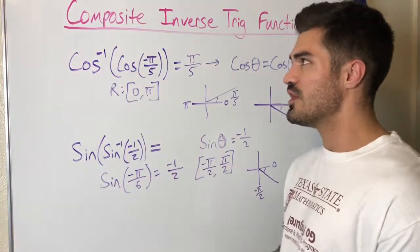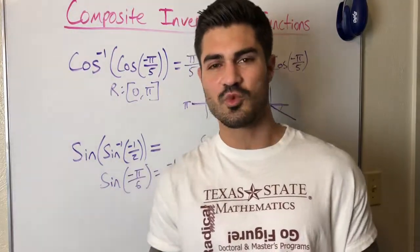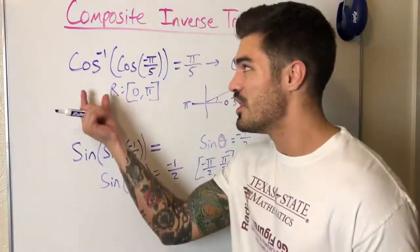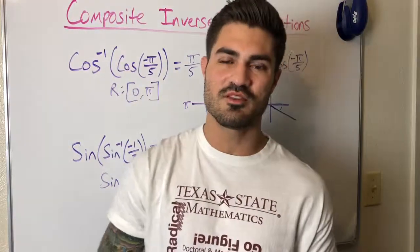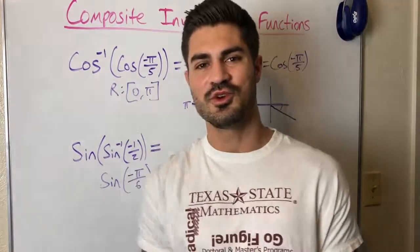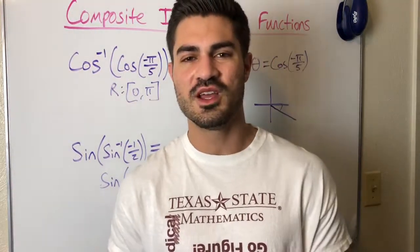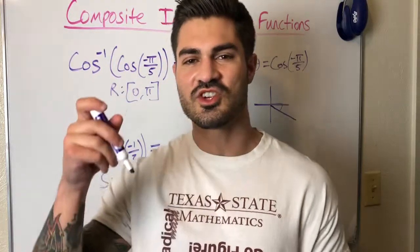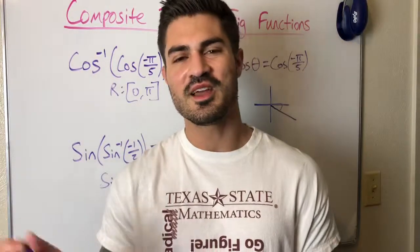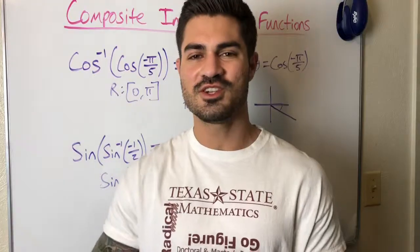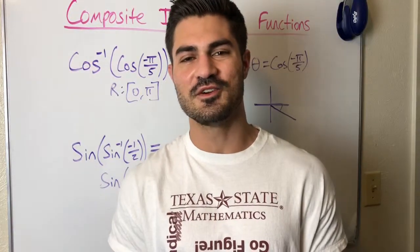In part two, I'll do more challenging examples where we have cosine and tangent with two different functions, requiring us to draw a triangle. Stay tuned for that. Hopefully this video helped. If you have questions, comments, or suggestions, leave them below, hit the like button, subscribe, and keep flexing those brain muscles. See you in the next video.